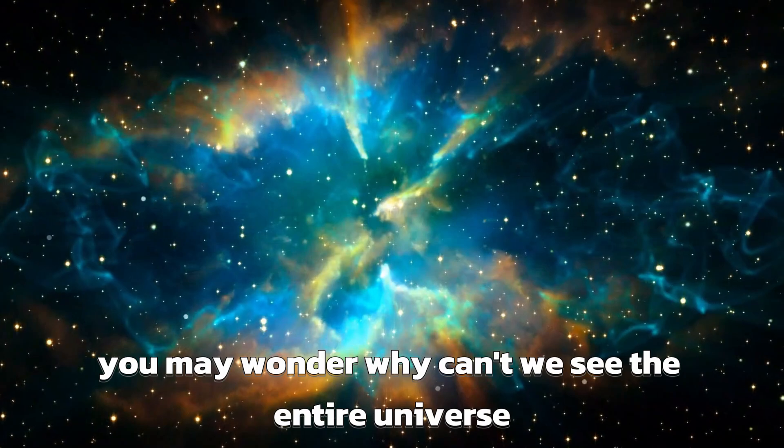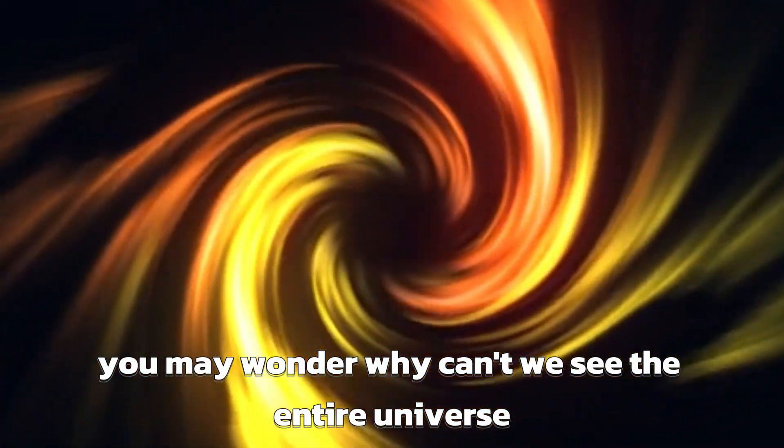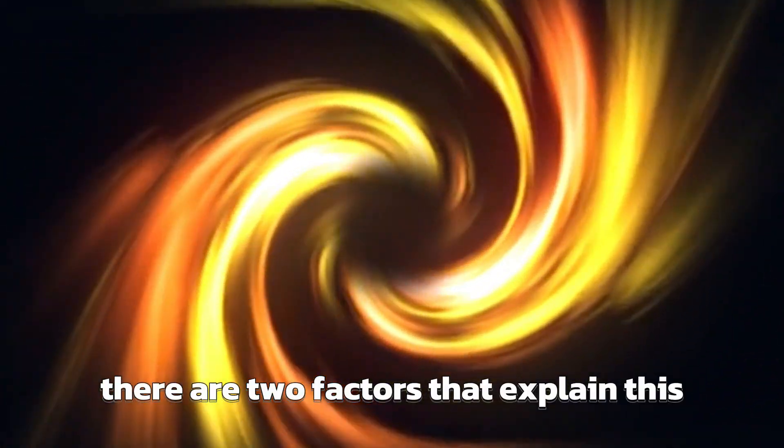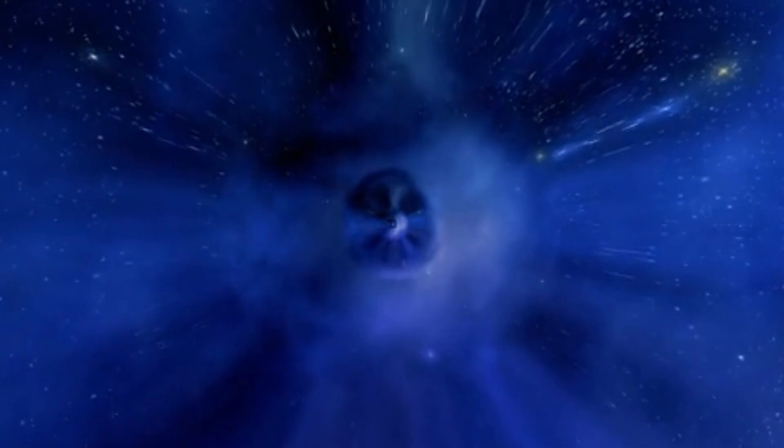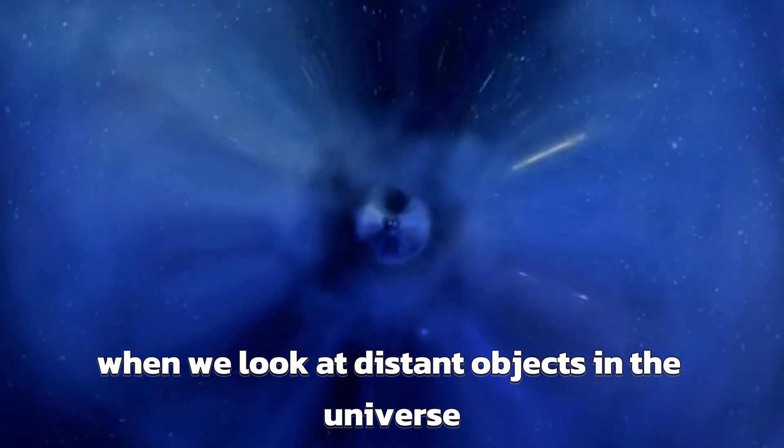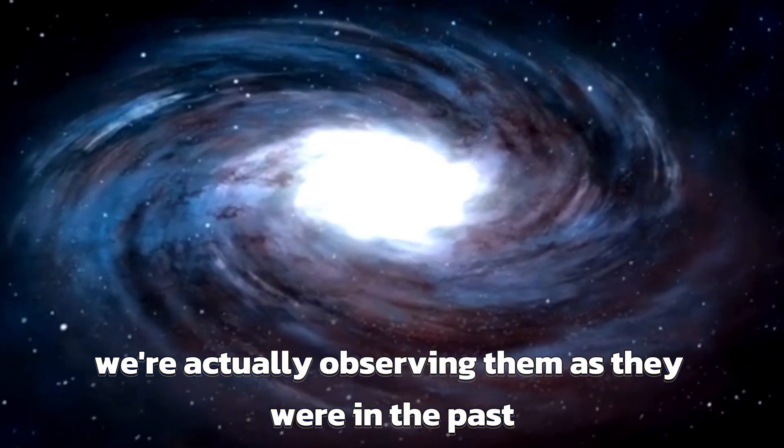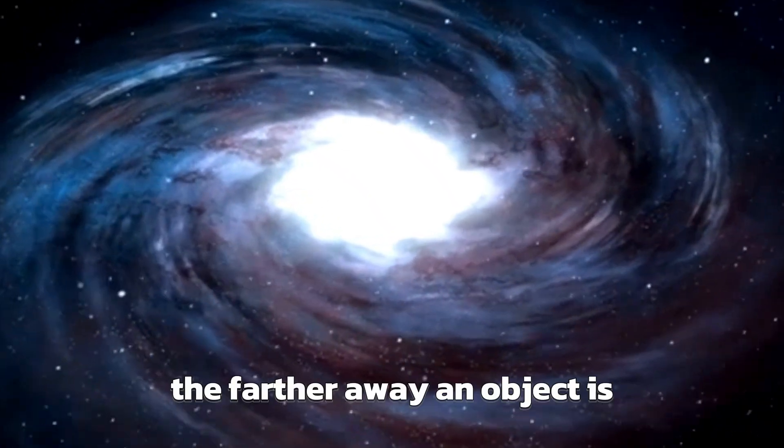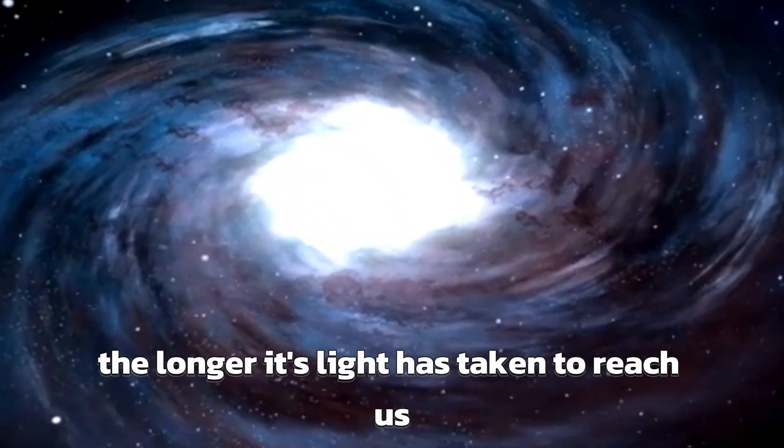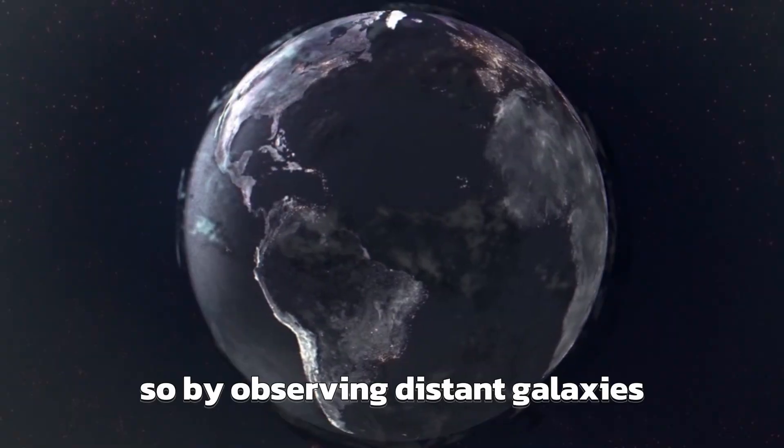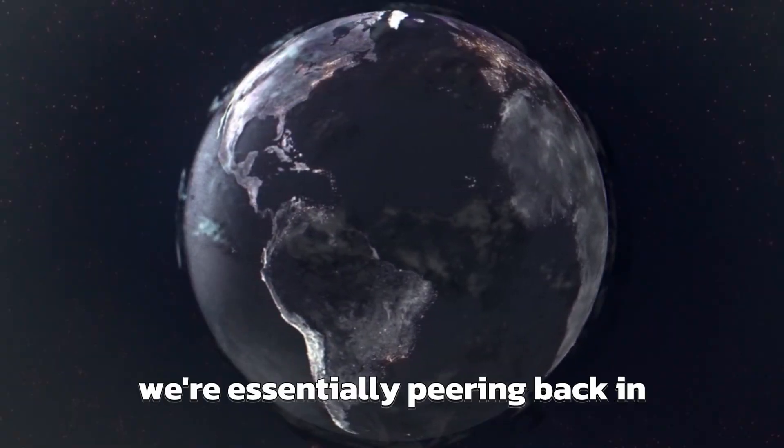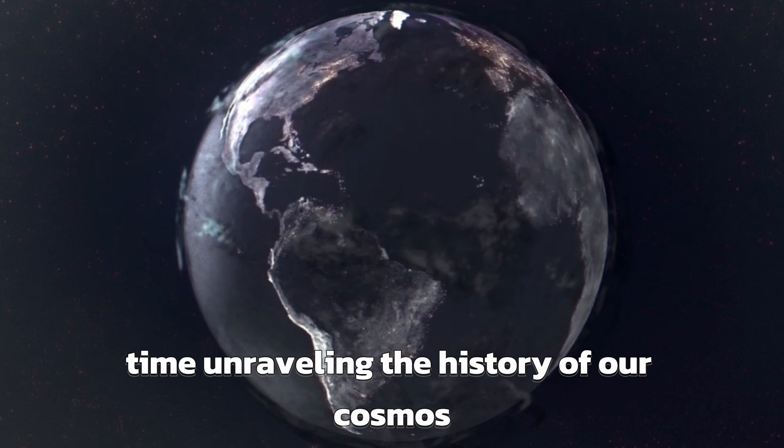You may wonder, why can't we see the entire universe? There are two factors that explain this. The first reason is that light takes time to travel through space. When we look at distant objects in the universe, we're actually observing them as they were in the past. The farther away an object is, the longer its light has taken to reach us. So by observing distant galaxies, we're essentially peering back in time, unraveling the history of our cosmos.